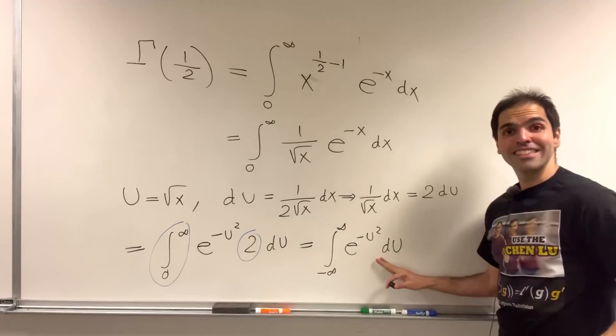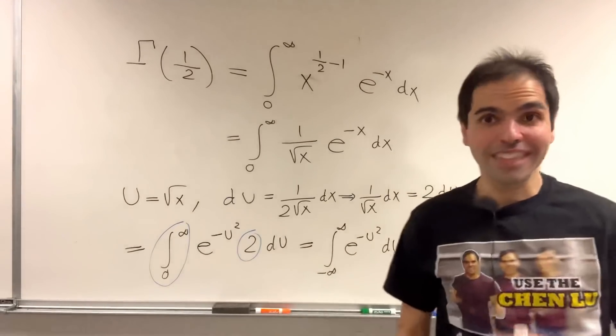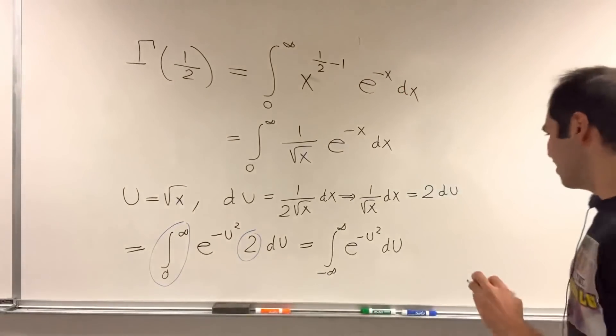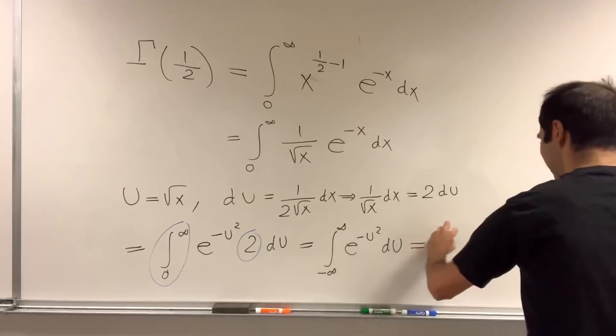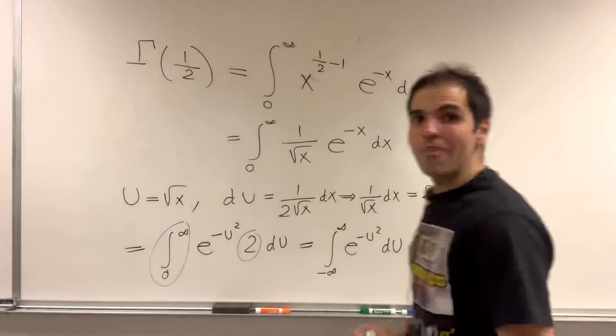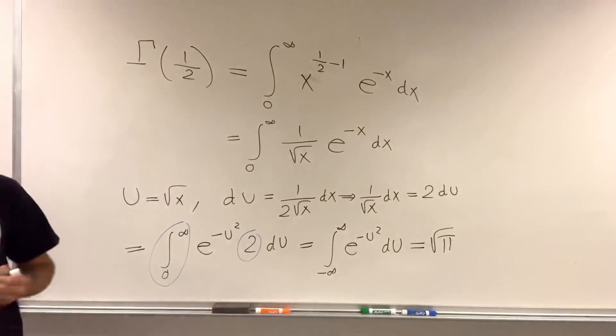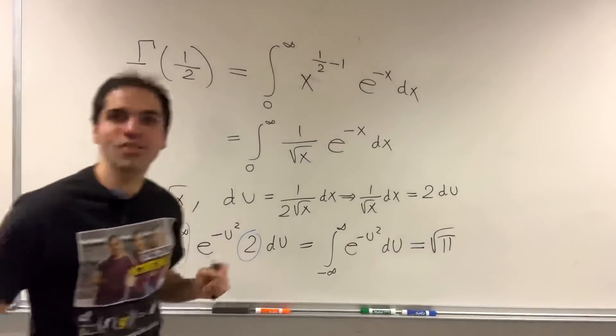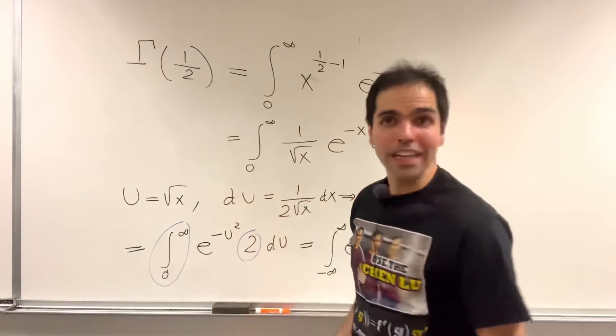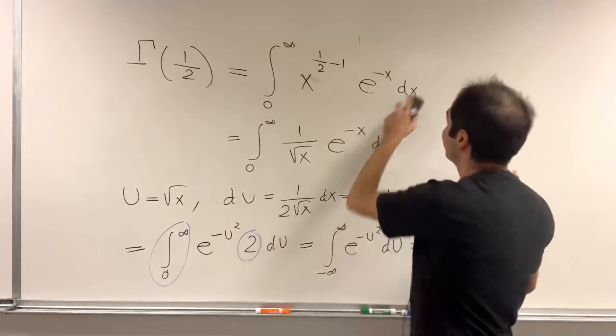And what is this? It's the Gaussian integral. So, which is equal to square root of pi. So, this gamma of 1 half is square root of pi. Which now completes our derivation of the half integral of x.